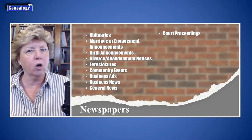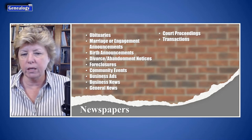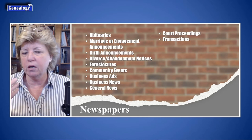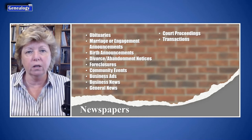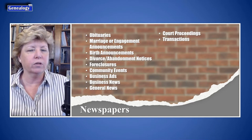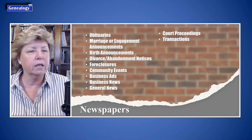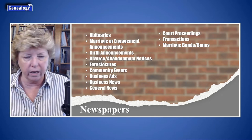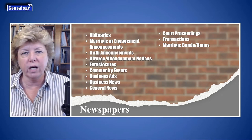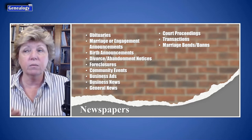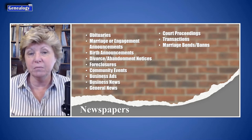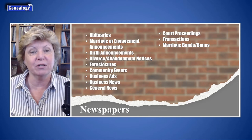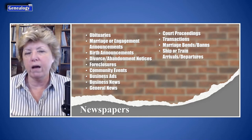Court proceedings — all kinds of types — can be found, as well as transactions. If somebody was selling a horse or doing some sort of transaction, that could appear. Also information about a will or somebody's estate — estate notices. Marriage bonds or banns are also a kind of marriage announcement. Bonds and banns were used to notify the community of a couple's intent to marry, to make sure there were no impediments — like if the groom had been married before and hadn't properly divorced, or was already married and trying to marry again.